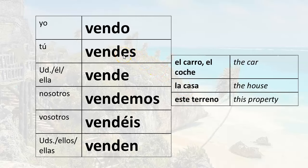You sell the car: vendes el carro or vendes el coche. You sell the house or you are selling the house: vendes la casa. You sell this property or you are selling this property: vendes este terreno. The formal you — usted vende el carro, usted vende el coche. You're selling the house: usted vende la casa. You sell this property: usted vende este terreno.